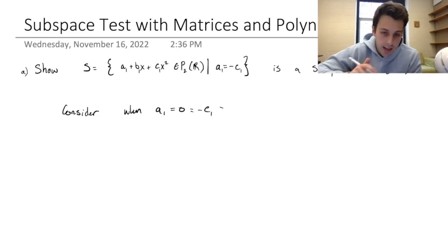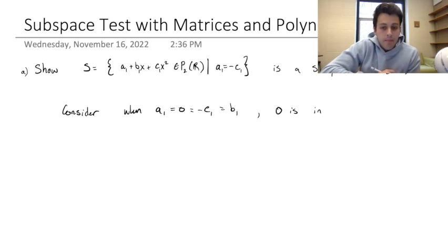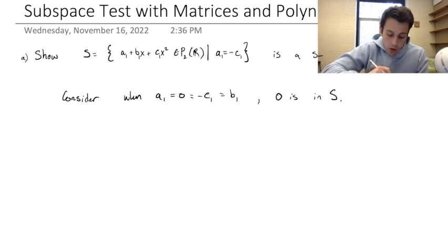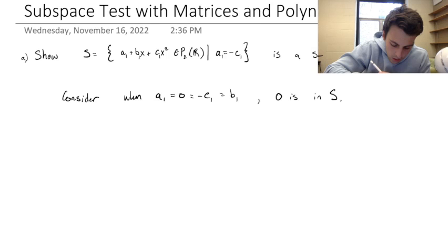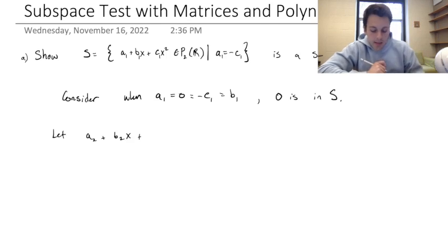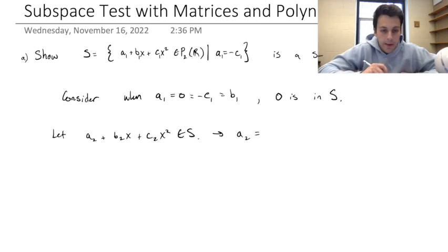In this case, zero is in S — the zero polynomial is in this vector space. Next we need to add two polynomials together. Let a2 plus b2x plus c2x² be in S. Remember this implies that a2 would be equal to minus c2.